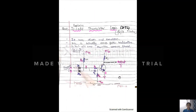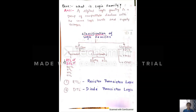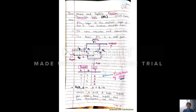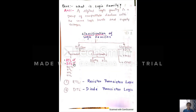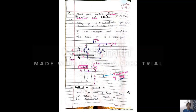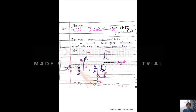Now let us continue with the second type: diode transistor logic, DTL. We have completed RTL, which is designed using resistors and transistors. In DTL, we use diodes D1 and D2 along with an NPN transistor. We apply two inputs A and B through D1 and D2 respectively. Again, we will discuss the four possible input combinations.